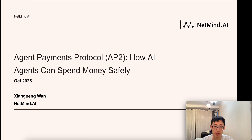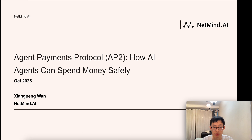AP2 is not a new payment system. It's a trust layer above the existing payment system, so that agents can spend money with authorization and accountability. I will break it down with the implementation, some business scenarios, and pros and cons, so that you can have a rough picture of it.